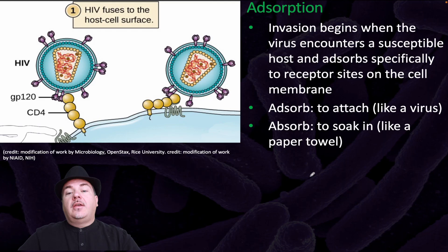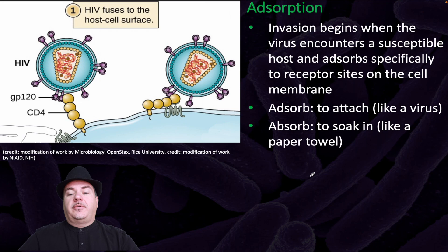The first step is adsorption. Invasion begins when the virus encounters a susceptible host and adsorbs specifically to the receptor sites in the cell membrane. Note that adsorb and absorb are not the same thing — adsorb means to attach, like a virus, while absorb means to soak in, like a paper towel.